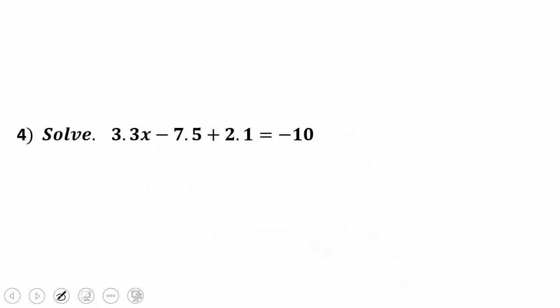Notice I have a negative 7.5 and I have a positive 2.1, like terms on the same side. When they're on the same side, I do the same operation. So a negative 7.5 plus 2.1, what does that give me? That's right. It gives me a negative 5.4. So now I have 3.3x − 5.4 = −10.